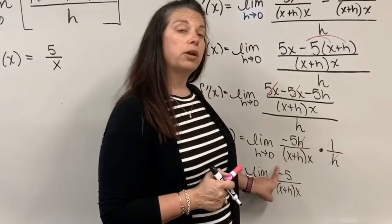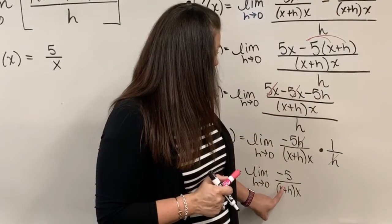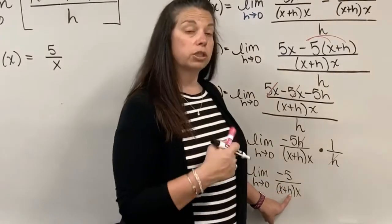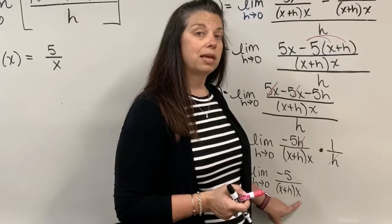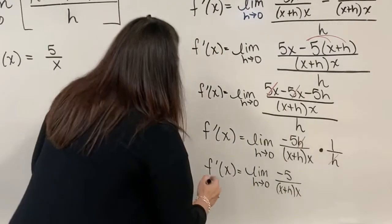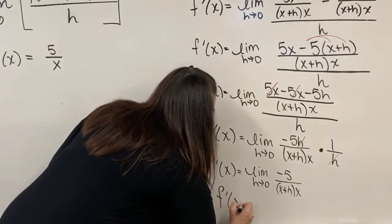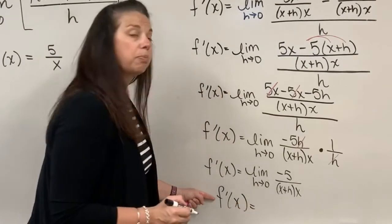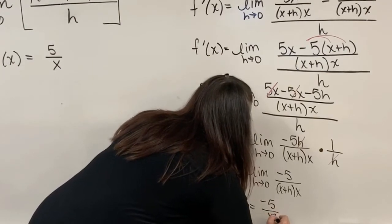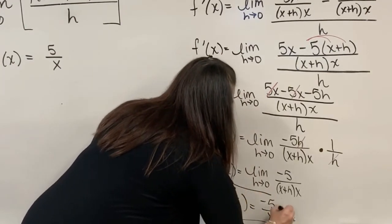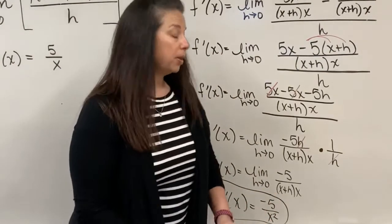In the denominator I have x plus 0, or just x, times the x that's here. So x times x is x squared. So my final result to all of this is simply just f prime of x is equal to negative 5 divided by x squared. And now I can box that and be done with the problem.